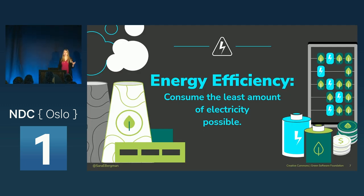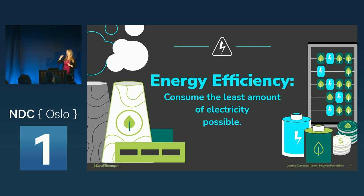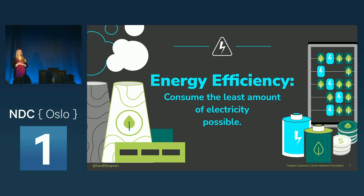The first is energy efficiency — probably the first thing that comes to mind, especially if you've been living in Europe through the energy crisis the past year. To be energy efficient, we need to consume the least amount of electricity possible, because electricity is a proxy for carbon. It's not a one-to-one mapping, but it's a very good proxy. You can be energy efficient by, for example, rewriting your code, or more likely you're going to get a lot more bang for your buck by being efficient with how you run your operations.